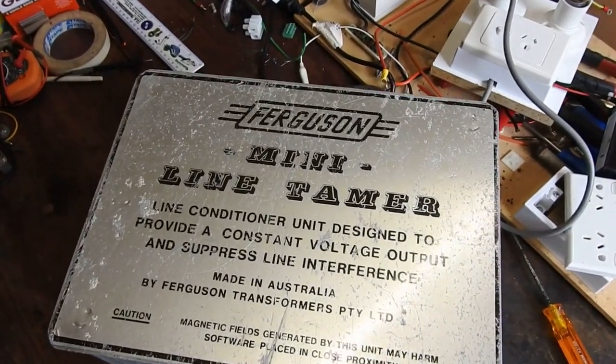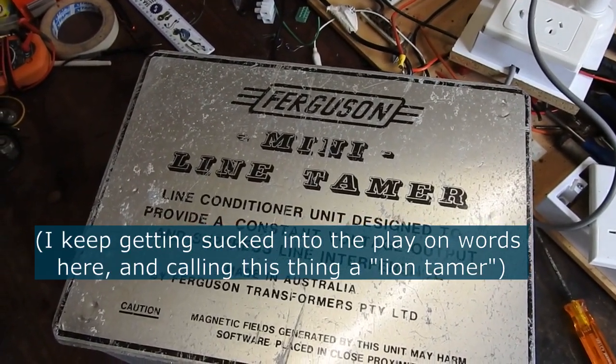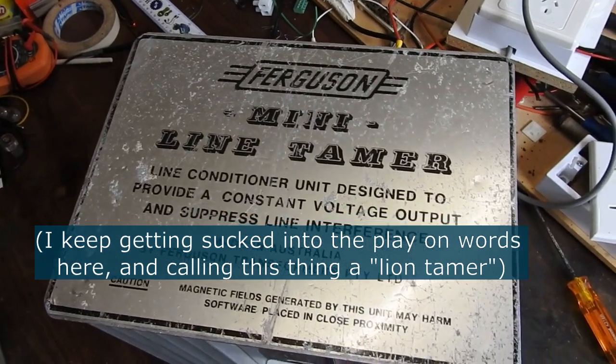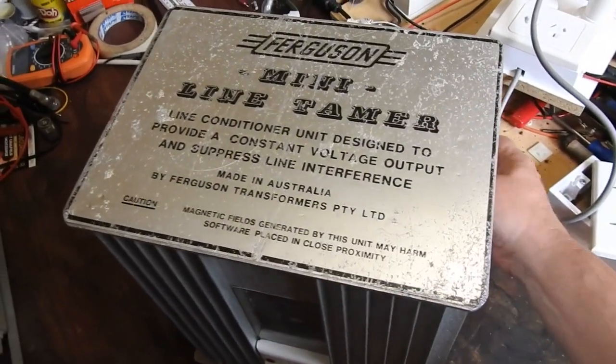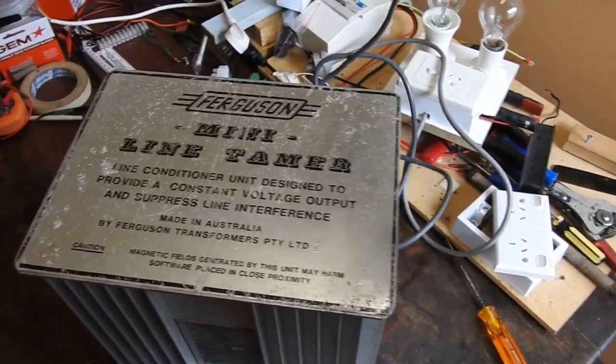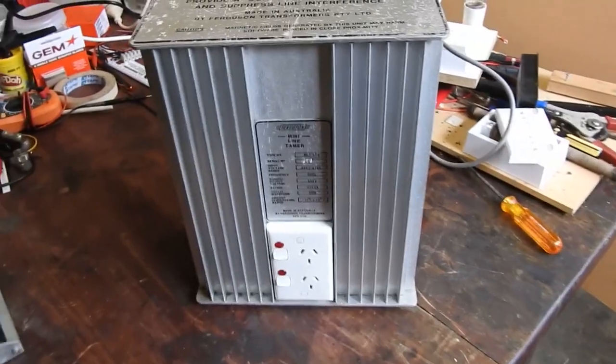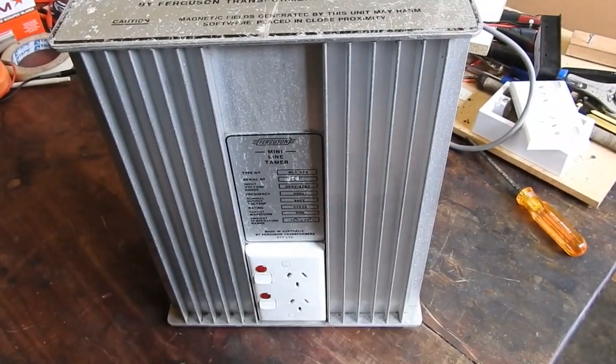It's a Ferguson mini lion tamer. Some sort of a power line conditioner thingy. So you plug that into your mains and run appliances from these two power points here.